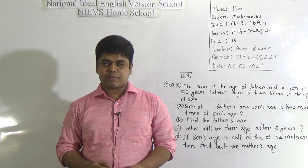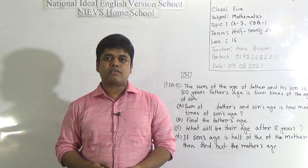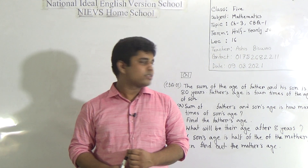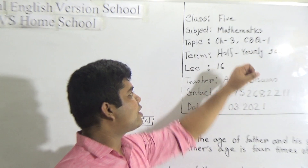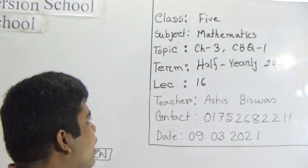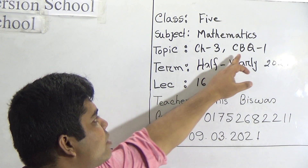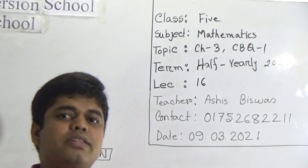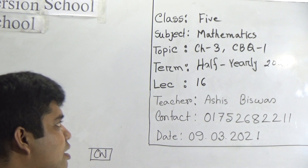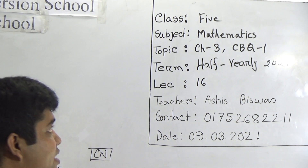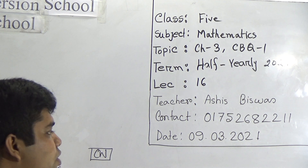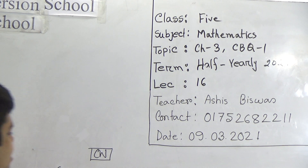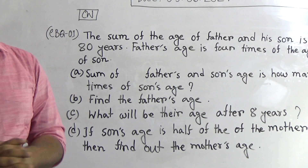Today I am going to take a math class for the students of class 5. Today is our lecture number 16 of half-yearly 2021, and our today's topic is chapter 3 CBQ number 1. There is no ASW today, but you should bear in mind that this CBQ 1 will be very important for your half-yearly exam. You must do this as your class work and practice more and more at home.